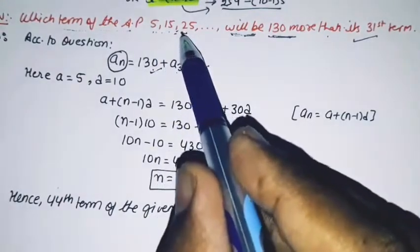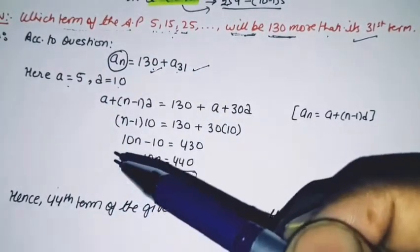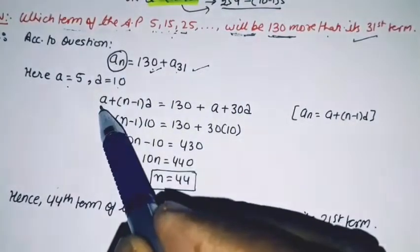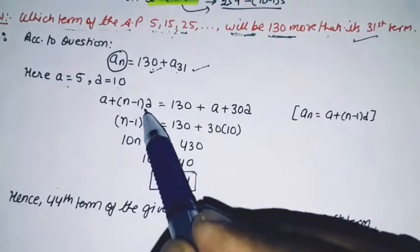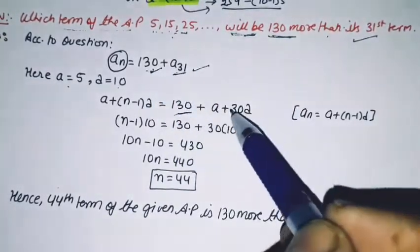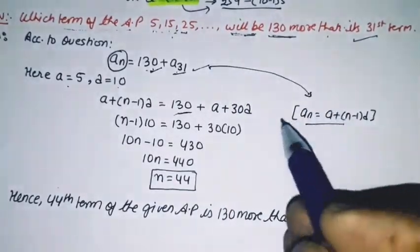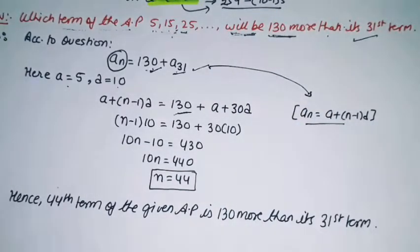In this series, we can easily see a equals 5 and d equals 10. We have an = 130 + a31. Using the formula an = a + (n-1)d, and a31 = a + 30d.